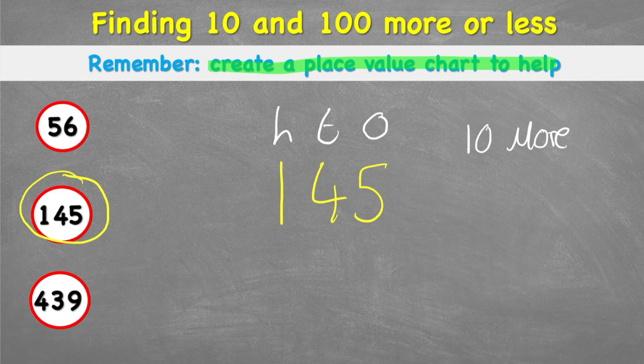Well, which column am I going to focus on with 10 more? I'm going to be looking in my tens column. And at the moment, I have a 4. And if I'm going to be adding a 10 to my tens column, that's going to turn into a 5. I didn't do anything to my ones column, so I can bring that down. That's another 5. And I didn't do anything to my hundreds column, so I can bring that 1 down. And my new answer to 10 more than 145 is 155.